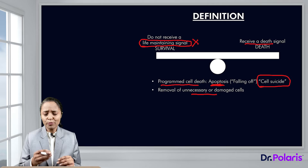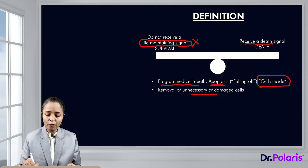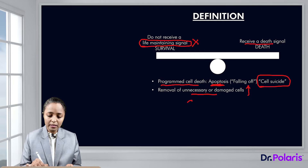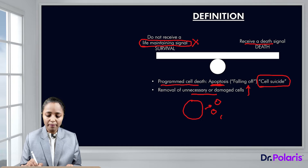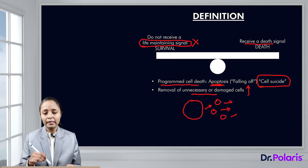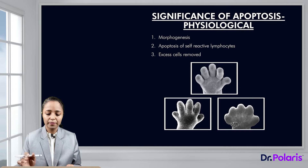The term apoptosis literally means 'falling off.' What happens is that small parts of the cell start falling off as small particles, and that is why it is known as apoptosis.